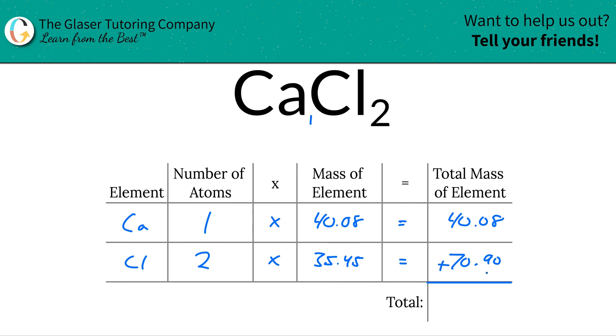Then to find the total, just simply sum this column together. Look at how nice and easy peasy that is. So this works out to be about 110.98. Since we're solving for molar mass, it is in grams per mole.